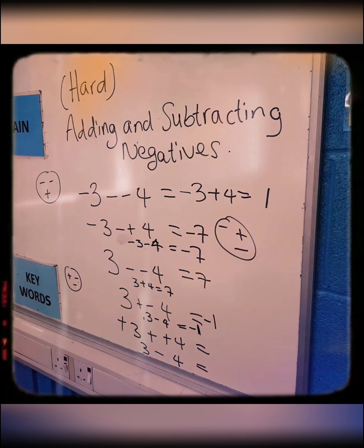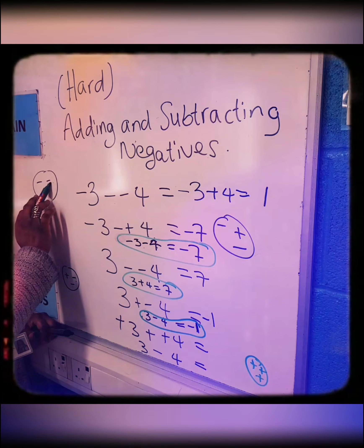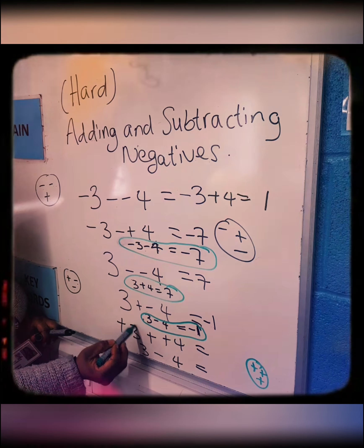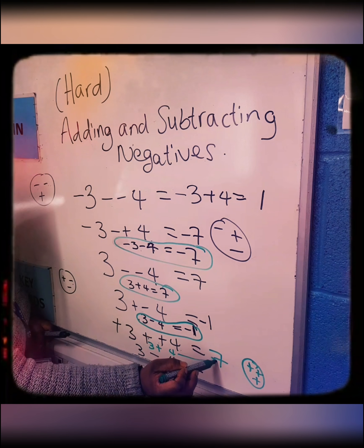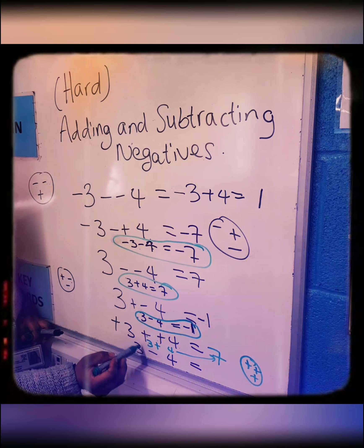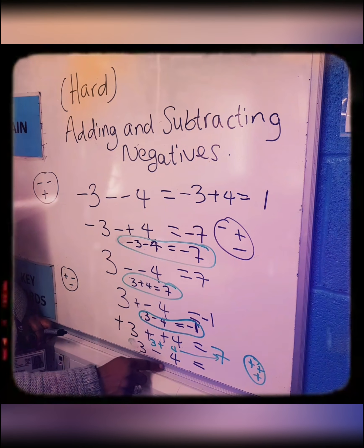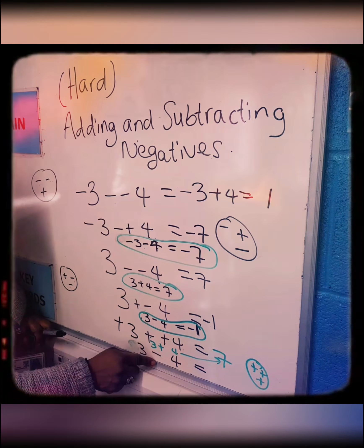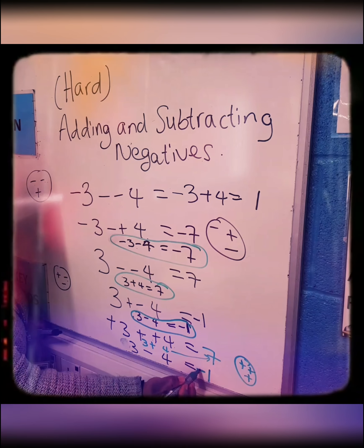I'm going to use a different color pen to highlight how we arrive at the answers. Positive 3 means you've got 3 pounds on you. Positive and positive are the same signs, so it's positive — this becomes 3 add 4, which is 7. Even if there's no positive sign in front of a number, it shows your 3 is with you. If you're owing 4 pounds and pay the 3 pounds you have, you will still be owing 1 pound after paying — so it's negative 1, because you're still owing.